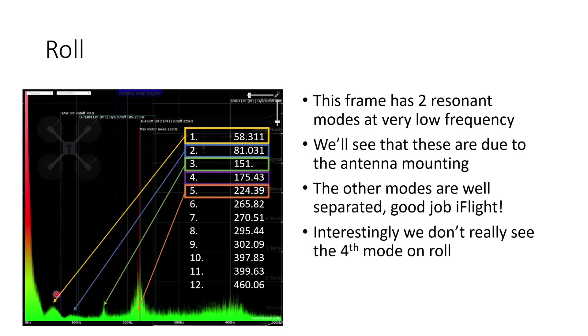And the two resonant modes at very low frequency are particularly troublesome because they're difficult to filter out. And what we'll see is that these two modes are due to the antenna mounting. Now the other modes, that 150, 175 and 225 Hz mode from the simulation, are frame resonances and they're really quite well separated. So iFlight has done a really good job on that aspect of the frame design. We've not got lots of modes that are very close together. The modes are nicely separated in frequency. And it's quite interesting that we don't see any evidence of the fourth mode at 175 Hz on roll, but we will see it on pitch when we look at that.